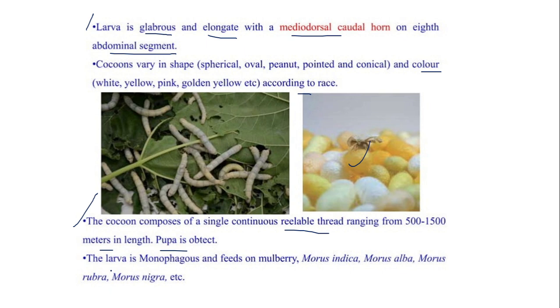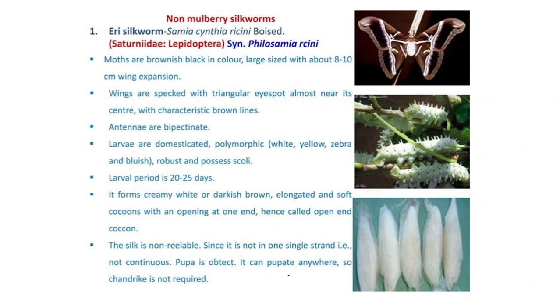The mulberry silkworm larvae is monophagous and feeds on mulberry — that is, Morus indica, Morus alba, Morus rubra, Morus nigra, etc.